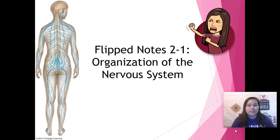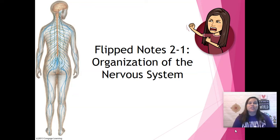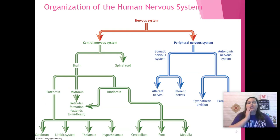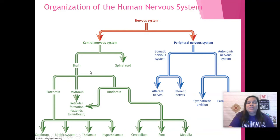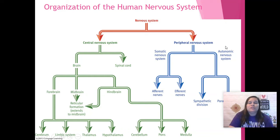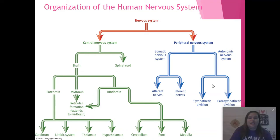Our first section is about the organization of the nervous system. I've got my bitmoji ready to fight because a big part of this section is the fight or flight response. The nervous system is made up of two other systems: the central nervous system and the peripheral nervous system. The central nervous system is where we'll spend most of our time in this unit, but today we'll spend more time in the peripheral. The peripheral nervous system includes the autonomic and the somatic nervous system, as well as the sympathetic and the parasympathetic divisions.